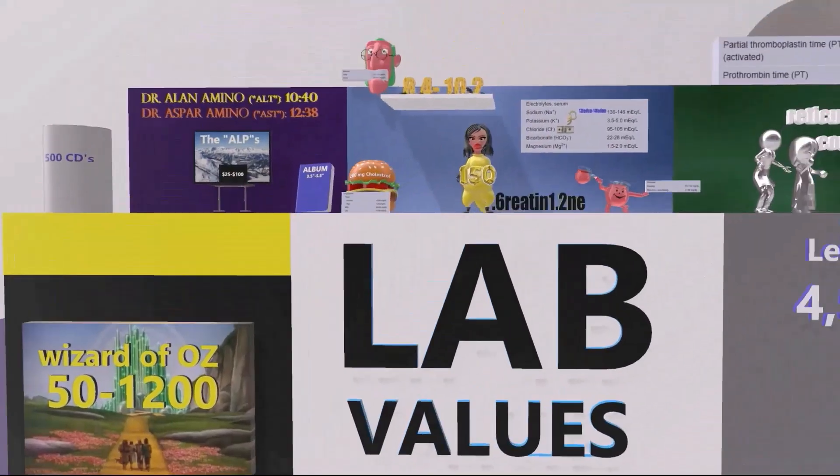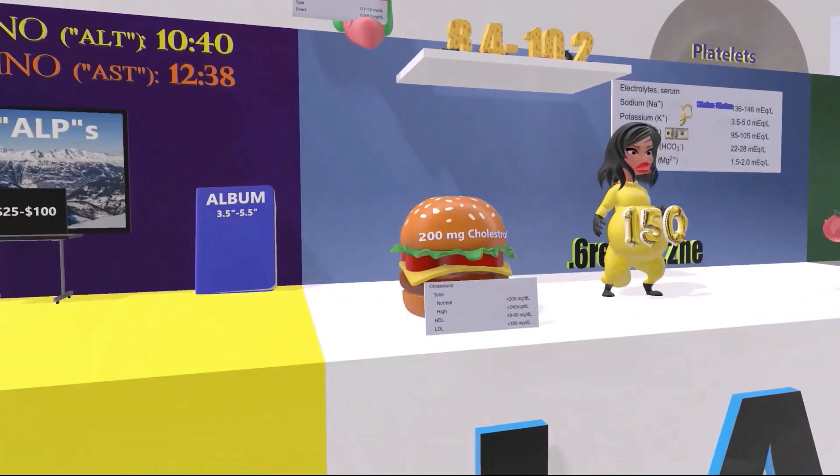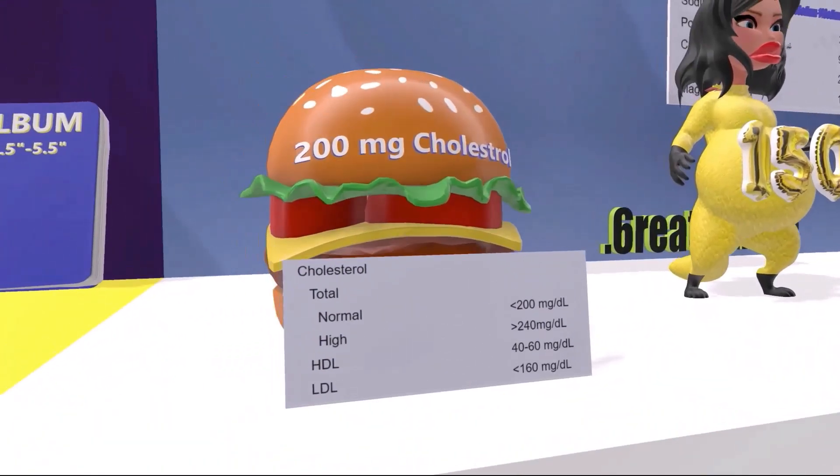All right, finally we're up to our next room over here. Let's take a look at this yummy burger. This yummy burger over here has 200 milligrams of cholesterol. This reminds us of normal cholesterol levels, that they should be lower than 200 milligrams per deciliter. High is considered above 240.